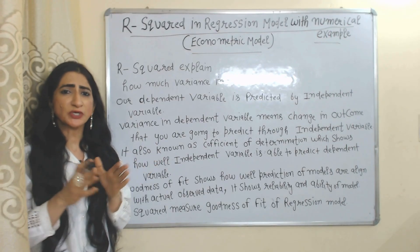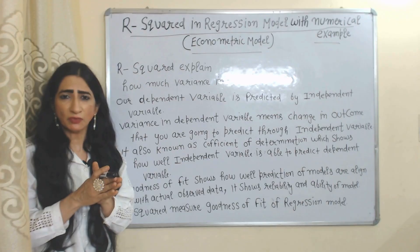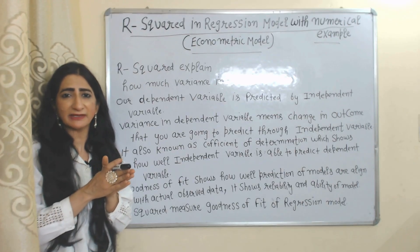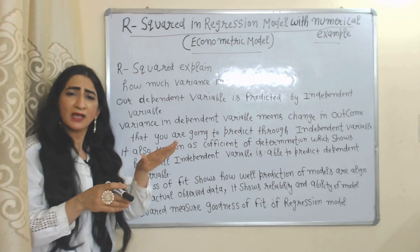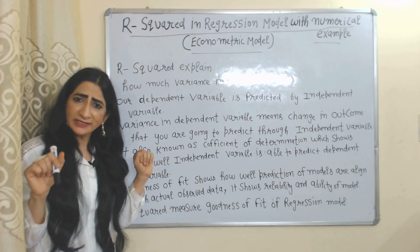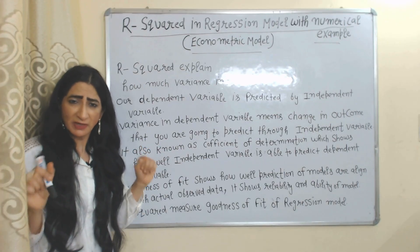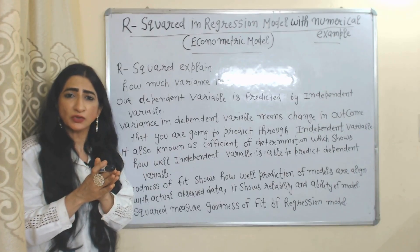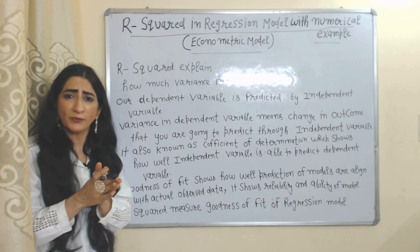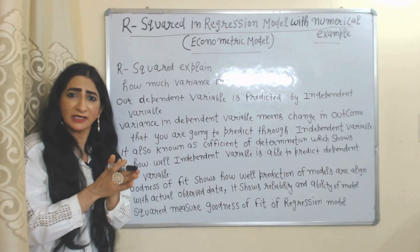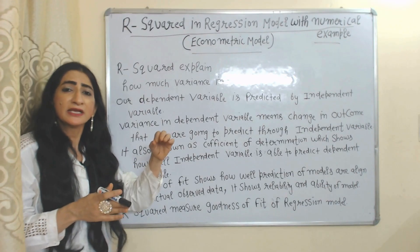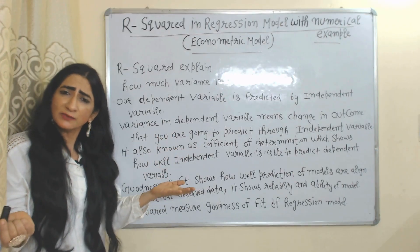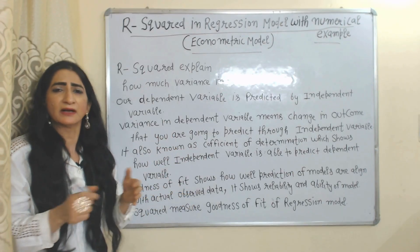As we know in a regression model, we try to predict a dependent variable based on an independent variable. In very simple terms, R-squared shows how well the independent variable is able to predict the dependent variable.